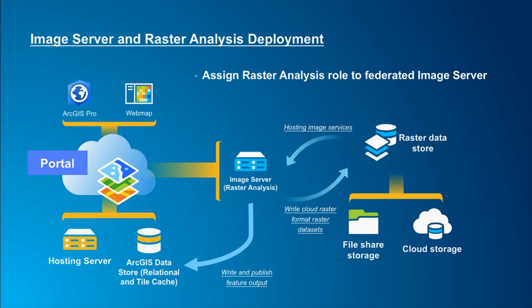The distributed raster analysis capability is one of the features provided through Image Server. With Image Server you can perform parallel raster analysis processing, and it also hosts the result image services generated from raster analysis. To assign the image server site the raster analysis role, you need to register a raster datastore — which can be a file share or cloud storage. Raster analysis stores all imagery output in optimized raster format in this raster datastore, automatically publishes an image service referencing that output. Feature outputs are stored in the relational database on the hosting server.